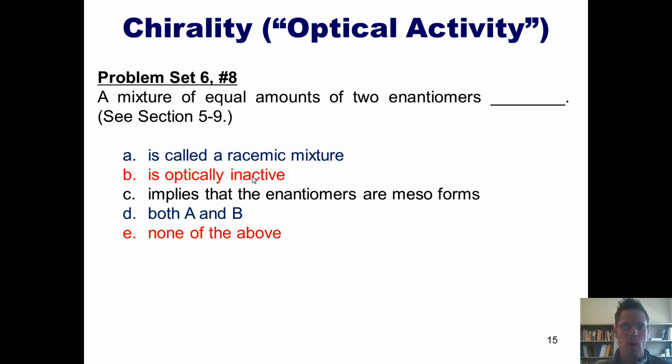if I use this magical machine, the polarimeter, and I have a vessel containing a solution of one enantiomer pure and that enantiomer rotates the light clockwise, a vessel that contains its opposite enantiomer will rotate the light by the exact same amount counterclockwise.